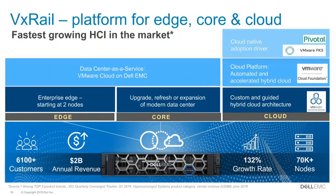In closing: VxRail is a very secure, resilient platform that can be used at the edge in very small deployments, in a core data center, or in cloud-scale private cloud deployments with Pivotal or VMware PKS as part of Cloud Foundation. We have over 6,000 customers, very healthy annual revenue growing faster than the market, and over 70,000 nodes deployed to date.